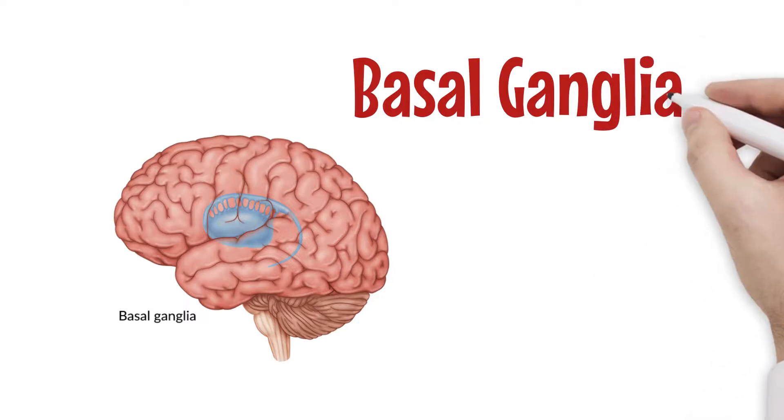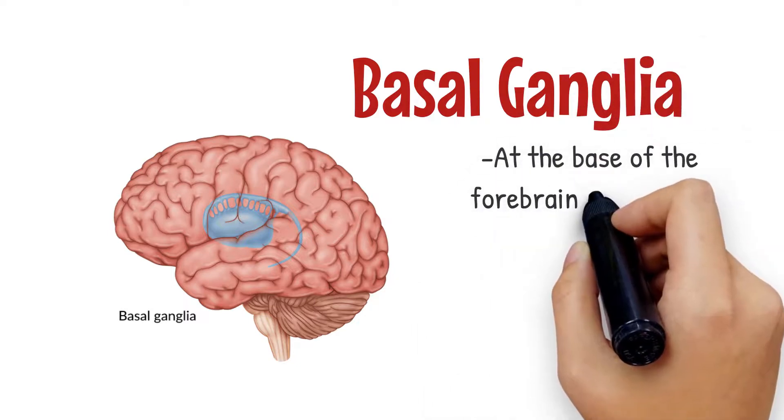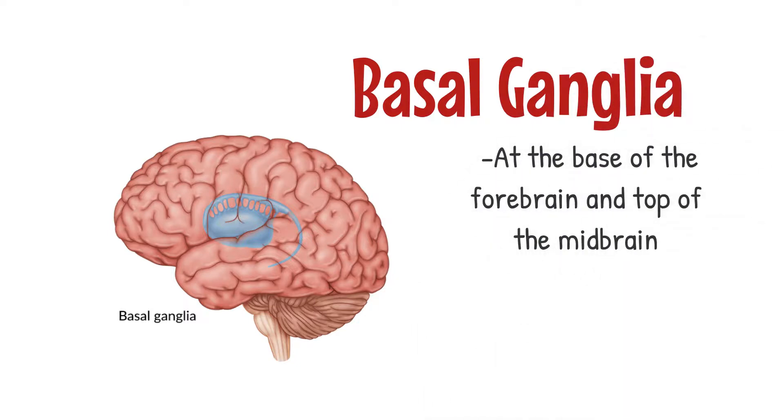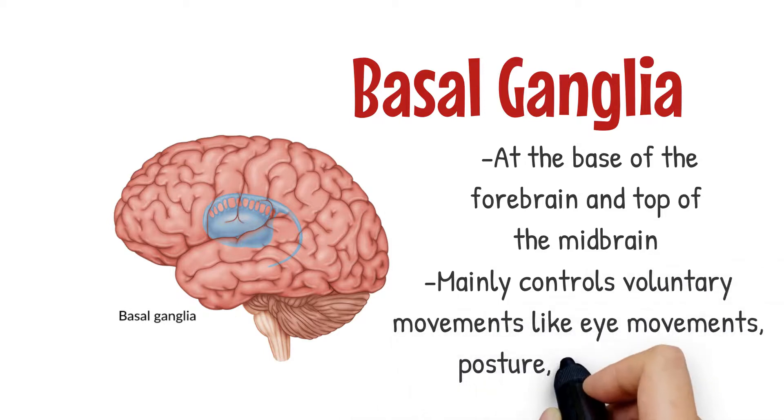The basal ganglia, situated at the base of the forebrain and the top of the midbrain, mainly controls voluntary movements like eye movements, posture, and balance.